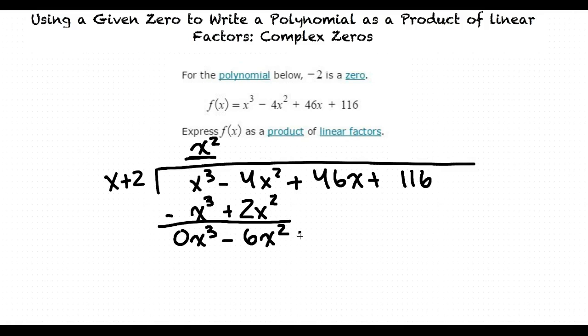We then carry the remaining terms down, and then we'll find another term, which will go here, where that term multiplied by x plus 2 will result in negative 6x squared. A term that satisfies this property is negative 6x.